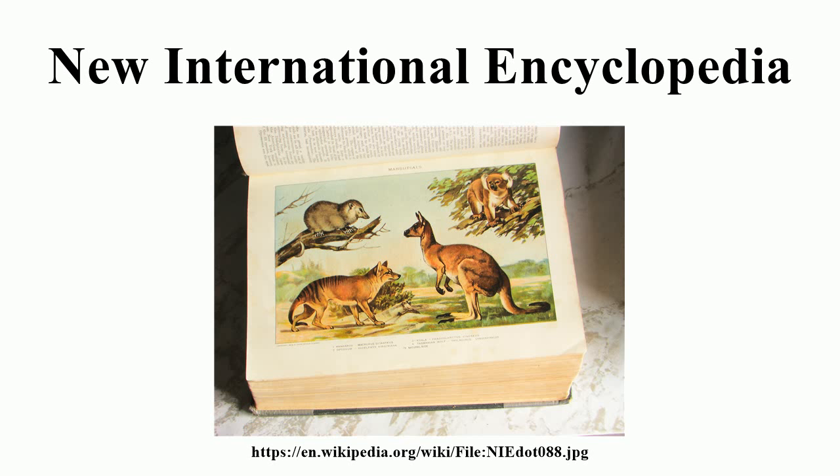In 1906, the New International Encyclopedia was expanded from 17 volumes to 20. The second edition appeared in 1914 in 24 volumes, set up from new type and thoroughly revised.